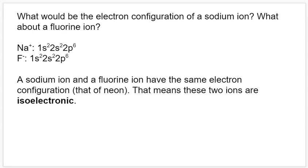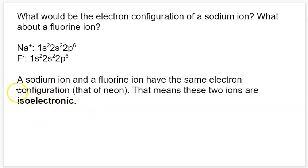You'll notice that a sodium ion and a fluorine ion actually have the same electron configuration. The number of electrons in an ion is not specific to an element the way protons are — electrons can be taken off or added, so the electron configuration changes as the number of electrons changes. This brings up the word 'isoelectronic' — the prefix 'iso' means same. Two things that are isoelectronic have the same number of electrons and the same electron configuration. Since Na⁺ and F⁻ have the same configuration, they are isoelectronic.